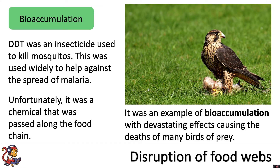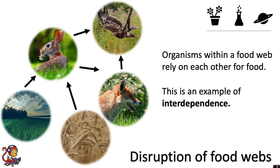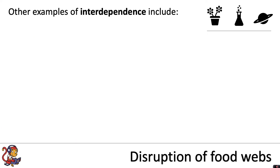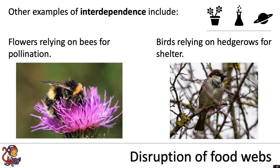This of course will have a knock-on effect on the whole food chain, or more widely the whole food web, because organisms within a food web rely on each other for food. This is an example of interdependence, and if one of those animals were to be wiped out — through disease, bioaccumulation, hunting, or habitat loss — the whole food web will be affected. Other examples of interdependence include flowers relying on bees for pollination and birds relying on hedgerows for shelter.